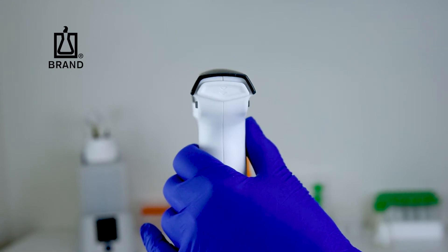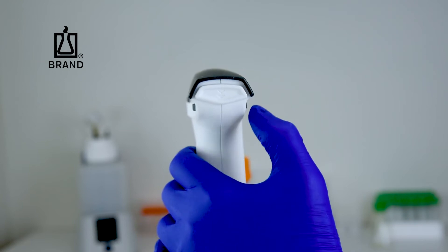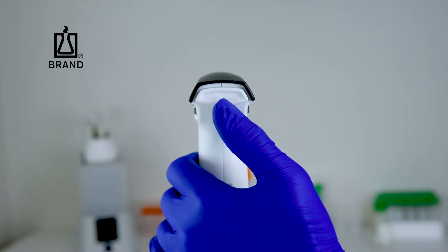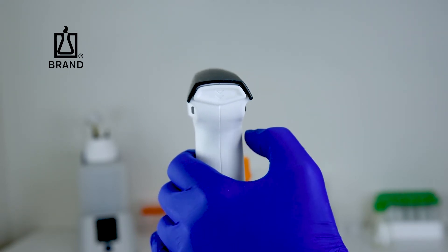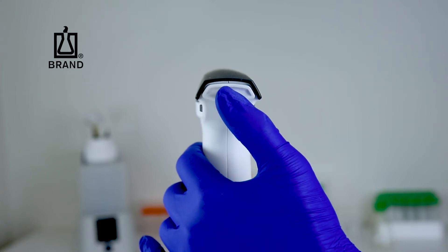To select your dispensing mode, simply use the switch at the back of the AccuJet S. Push the switch up to use Gravity Delivery and push the switch down to use Motor Assist Blowout.